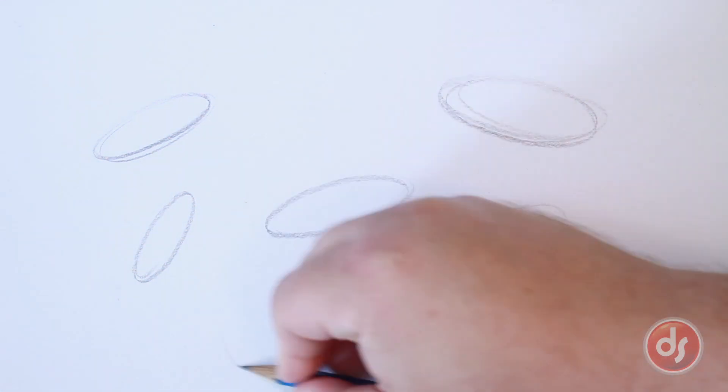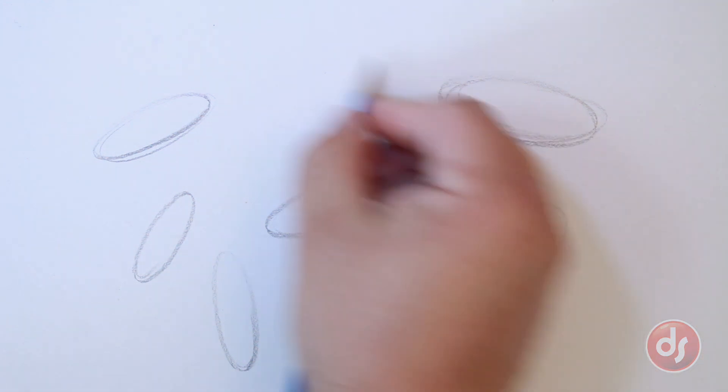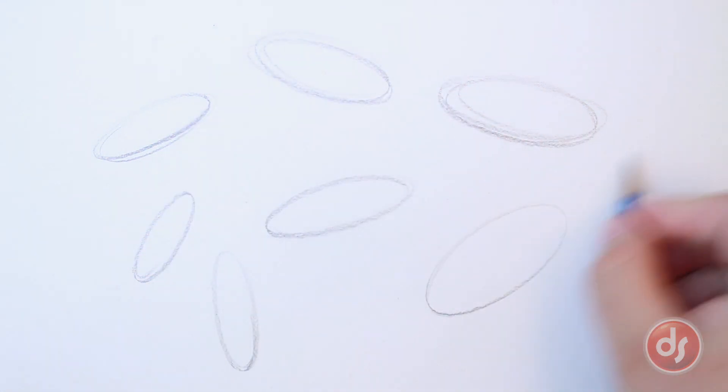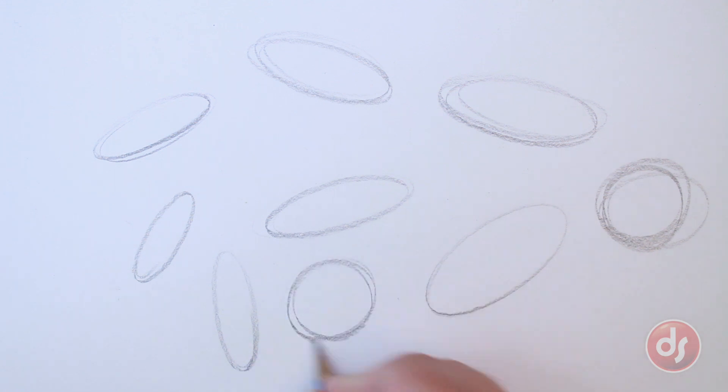If you get a bad one, that's fine. Just try to make the next one better. Mix in some circles too. See how round you can get them.